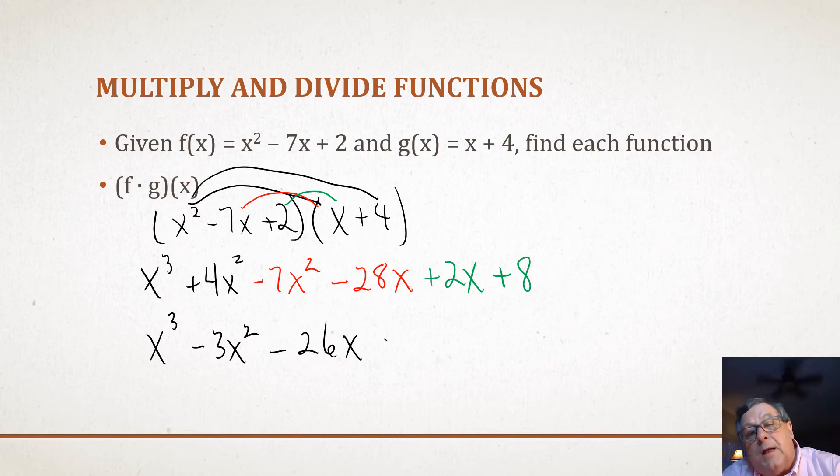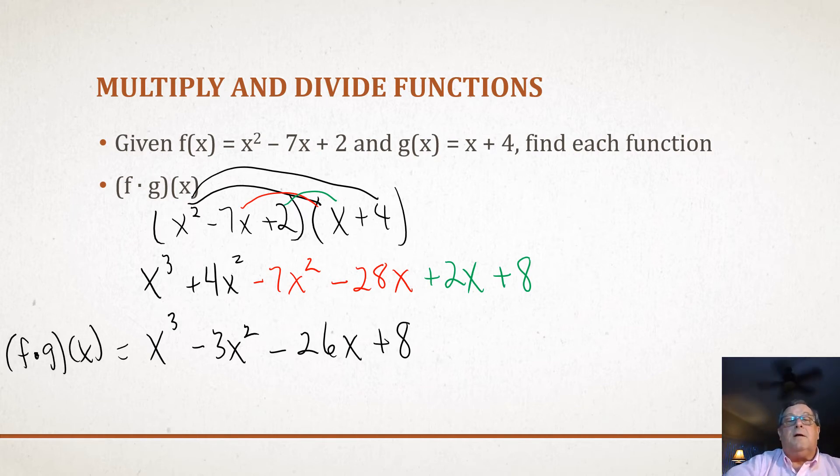And then a +8. So f times g of x equals, in this case, given what f(x) is and g(x) is, x³ - 3x² - 26x + 8.